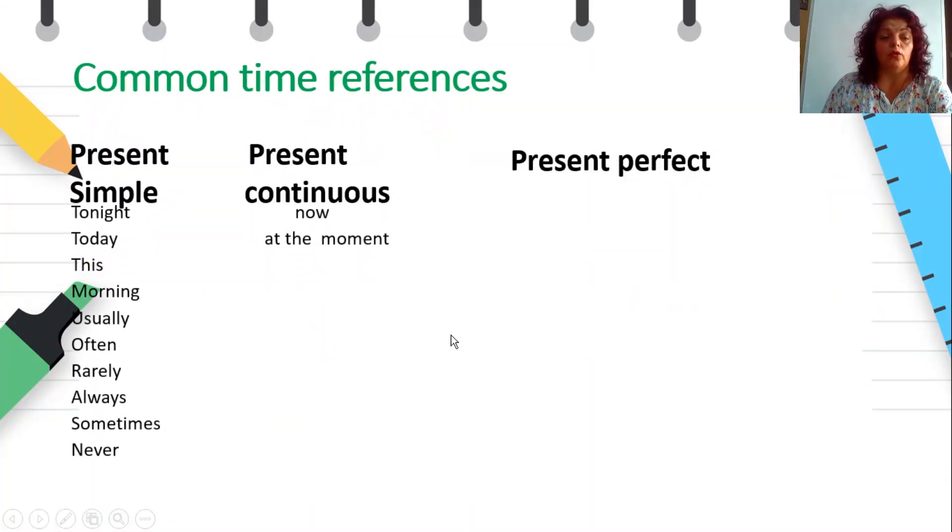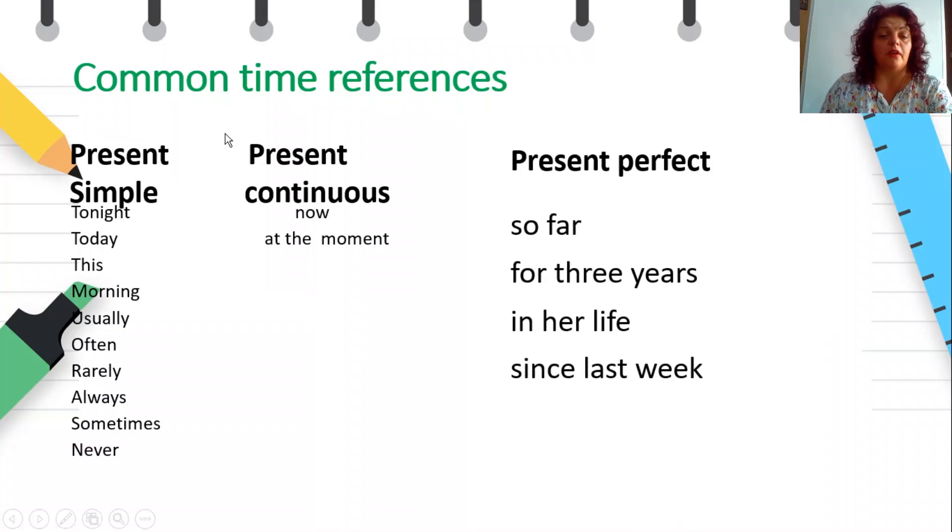Let's see what are the common time references for all these three tenses. Present simple usually uses all these time references, like tonight, today, this morning, usually, often, rarely, always, sometimes, never, etc. Present continuous: now and at the moment. Present perfect: so far, for three years, since last week, etc.